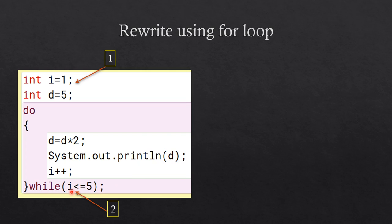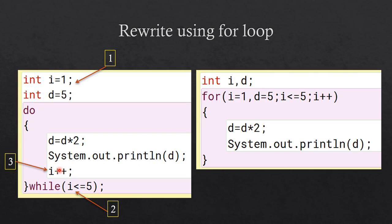You have to identify the updation statement. Since i is used to check the condition, i plus plus will be the updation statement. You have two variables, but you only need to check the updation of i because the condition checks i less than or equal to 5. When it reaches 5 it will stop. Now combine the declaration into a single line: i equal to 1 comma d equal to 5, then semicolon, then the test condition i less than or equal to 5.